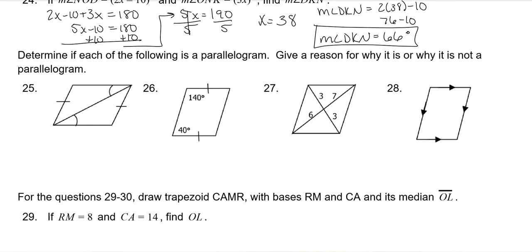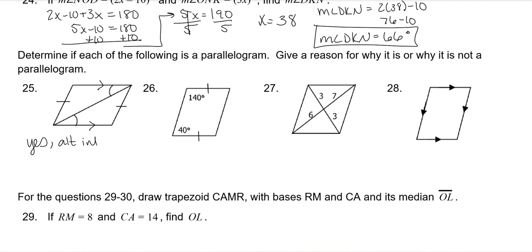Determine if each figure is a parallelogram and give a reason. The first one: because these are parallel lines cut by a transversal, those angles are congruent alternate interior angles, so we know one pair of sides is parallel. And since the opposite sides are also congruent, yes—it is a parallelogram. The reason is alternate interior angles prove parallel sides, and opposite sides are congruent.